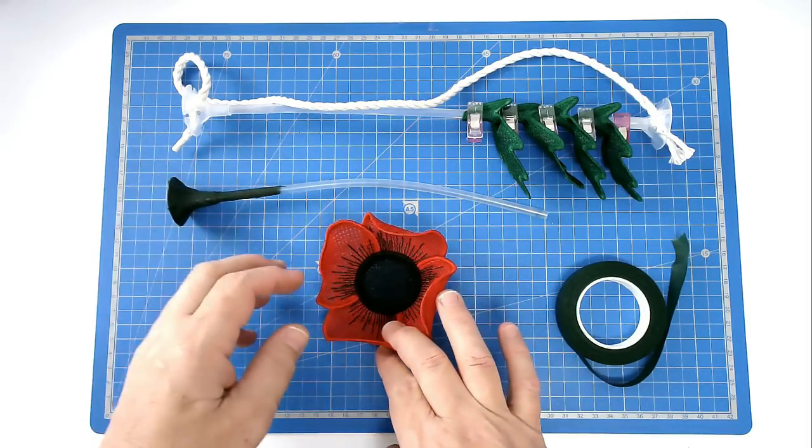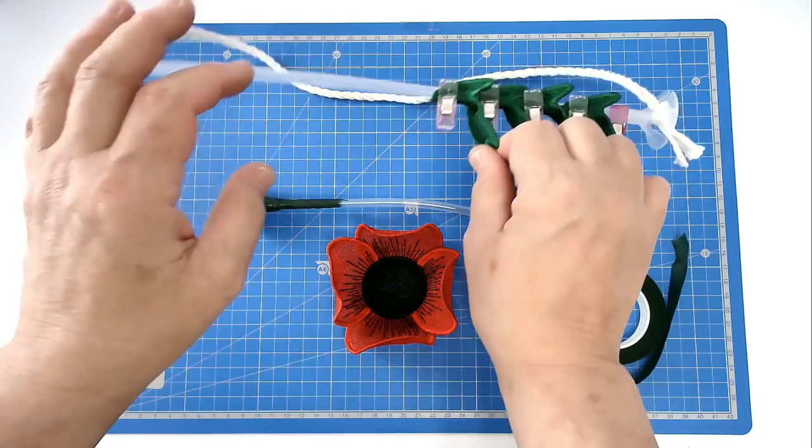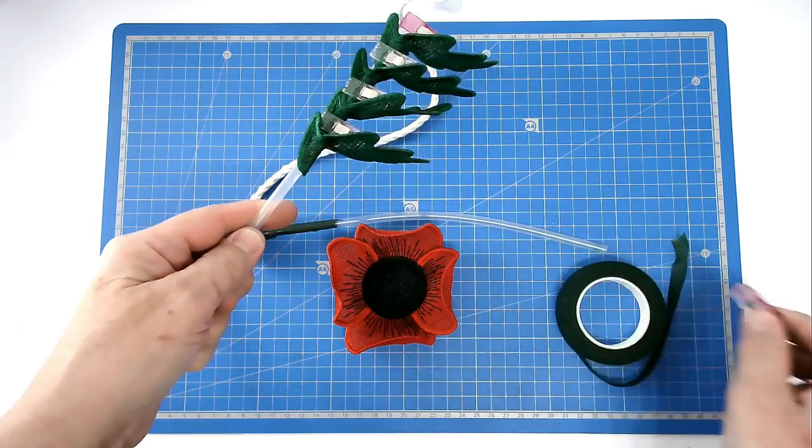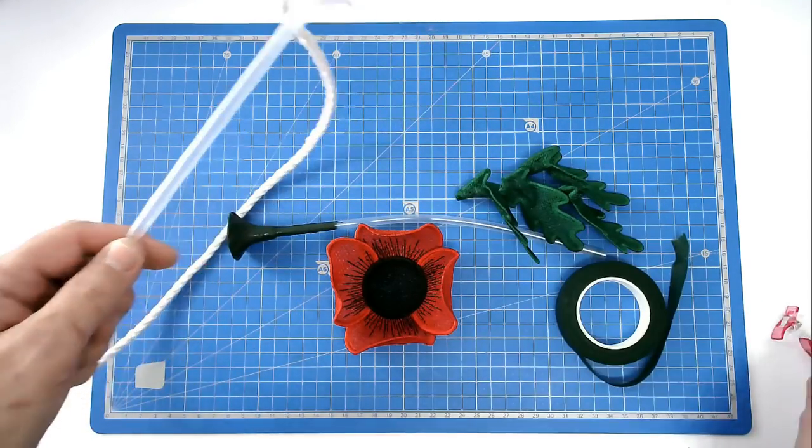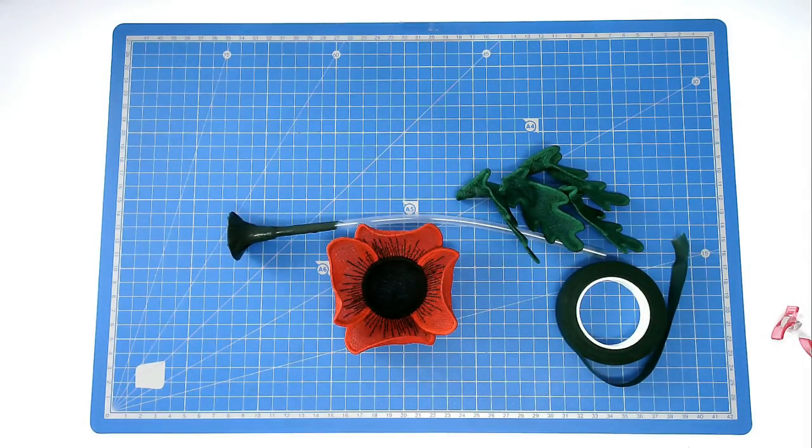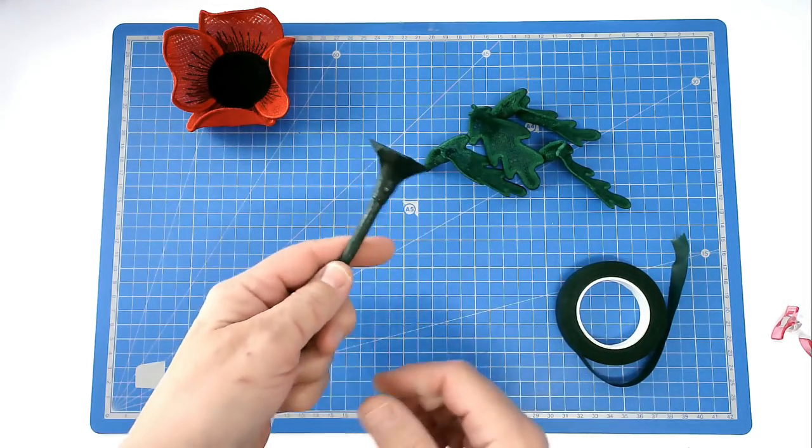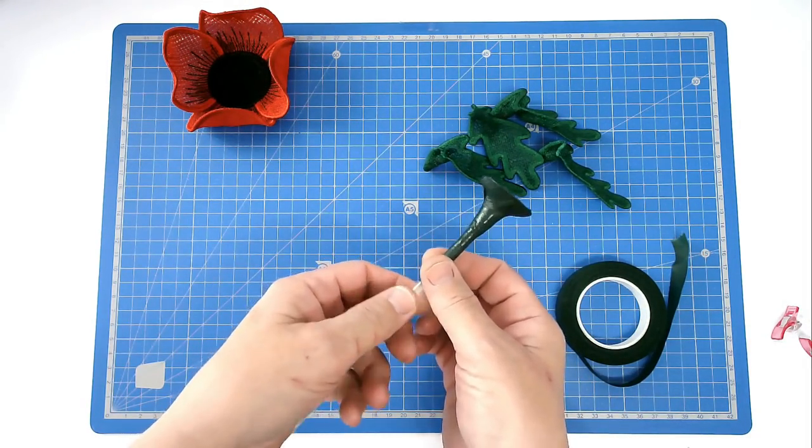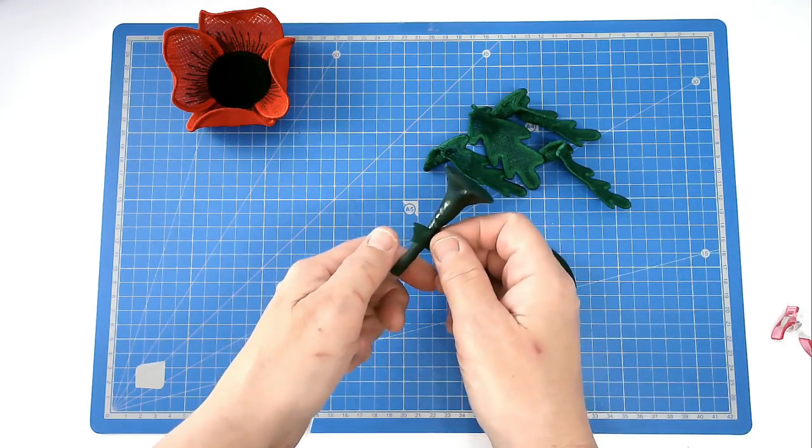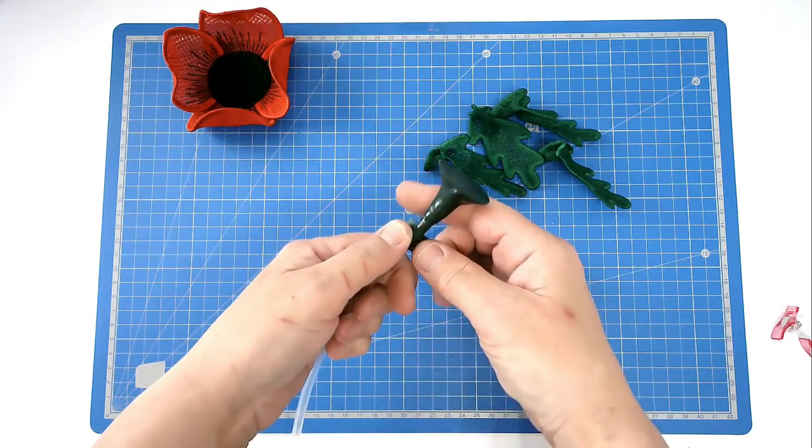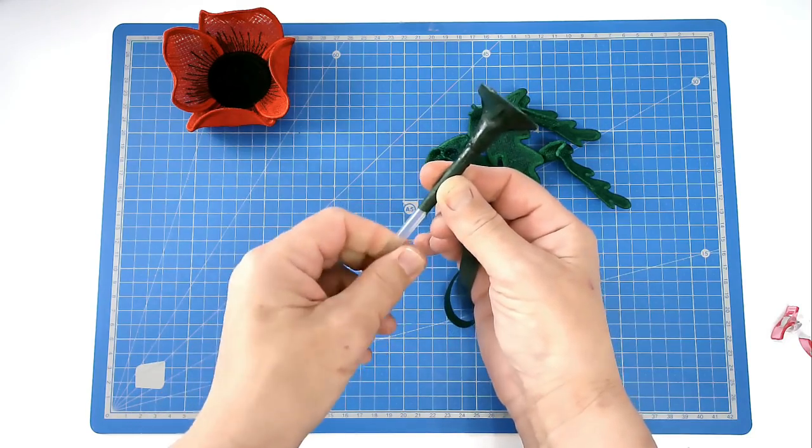So that's all my poppy parts all dried off, so I can now take these off the stem. I'm going to put that aside for a minute. So take your poppy stem and you're going to start winding your florist tape back onto it again, so starting up here and working your way down.